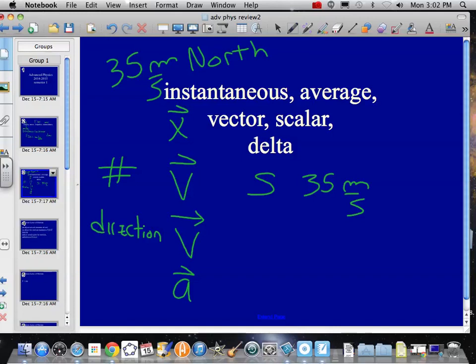Now, instantaneous and average. Instantaneous means actually at an instant. The hard part for us is we never really are able to get an instantaneous in a classroom. We actually get averages of things, always. And that's hard for us to do.